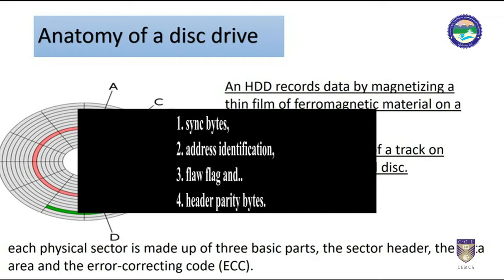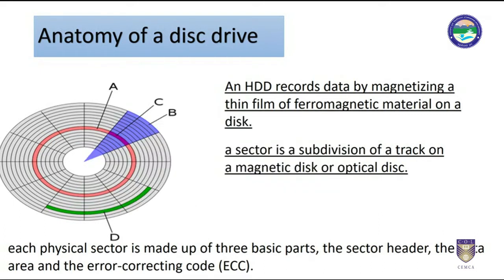The header may also include an alternate address to be used if the data area is unreliable. The address identification is used to ensure the mechanics of the drive have positioned the read-write head over the correct location. The data area contains the recorded user data, while the ECC field contains codes based on the data field, used to check and possibly correct errors introduced into the data.